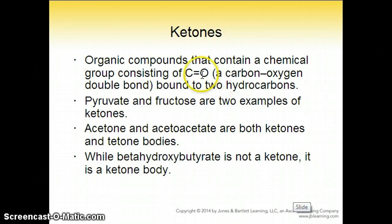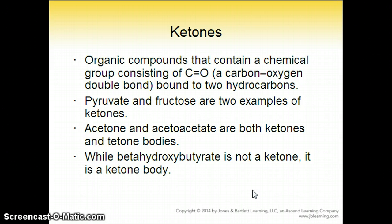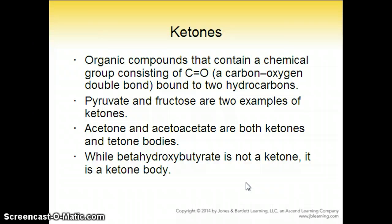Ketones. Ketones are organic compounds that contain a chemical group consisting of a carbon-oxygen double bond bound to two hydrocarbons. Pyruvate and fructose are two examples of ketones. Acetone and acetoacetate are both ketones and ketone bodies, while beta-hydroxybutyrate is not a ketone but it is a ketone body.